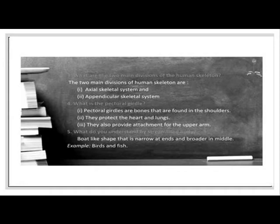What is the pectoral girdle? Pectoral girdle are bones that are found in the shoulders. They protect the heart and lungs. They also provide attachment for the upper arm.